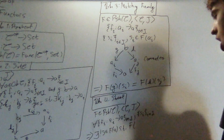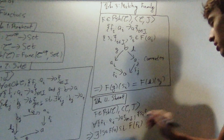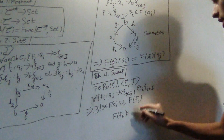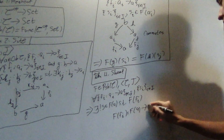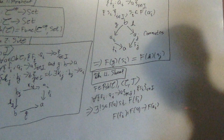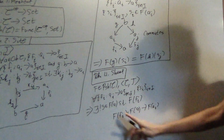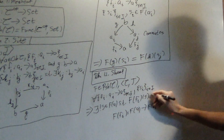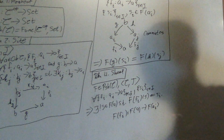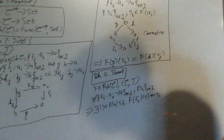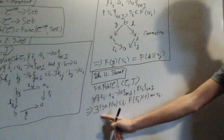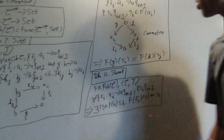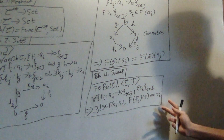Such that F applied to f_i — and since F is contravariant, f_i goes from A_i into A, so F(f_i) goes from F(A) into F(A_i) — gives us F(f_i)(s) = s_i. So s is in F(A) and s_i is in the matching family. A sheaf is a pre-sheaf where, given a covering family and a matching family, there exists a unique element that generates the matching family. It makes matching families all the more useful.